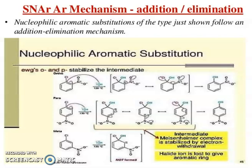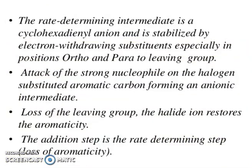With electron withdrawing groups at ortho positions there are two resonance structures, at para positions there are three, and at meta positions only one — no resonance stabilization. The rate-determining intermediate is the cyclohexadienyl anion, stabilized by electron withdrawing substituents especially at ortho and para positions to the leaving group. Loss of the halide ion restores aromaticity. The addition step is rate-determining.